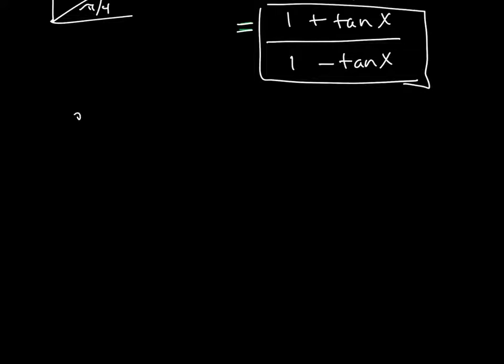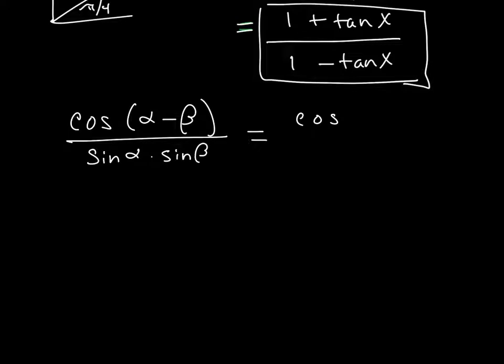So, if I give you the cosine of alpha minus beta all over sine of alpha times the sine of beta, I want to make that one equal the cotangent of alpha times the cotangent of beta plus 1. Now, with this one, obviously, all of these in this section are the addition and subtraction formulas, but we really do always want to break those up. So, I want to go ahead and break the cosine one up. I'm going to go ahead and do that.